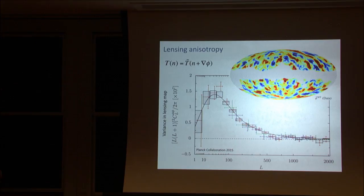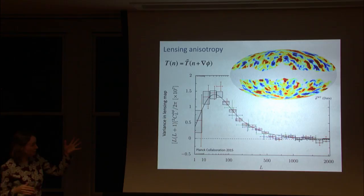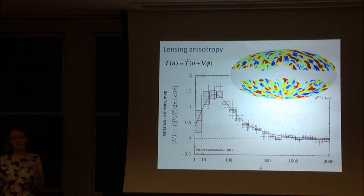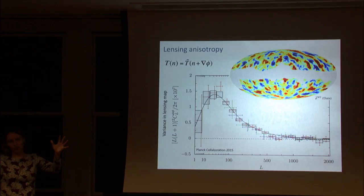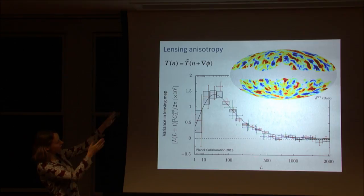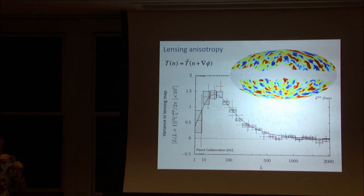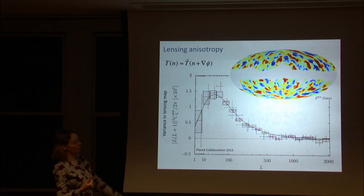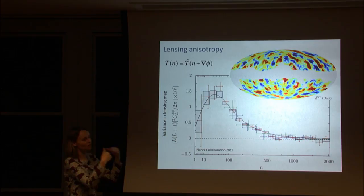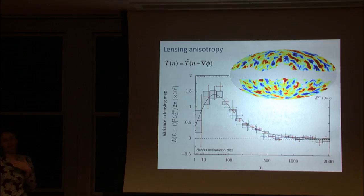One thing we'll be doing better is measuring the lensing anisotropy from the CMB. The CMB gets lensed around large-scale structure: the temperature in any given direction gets distorted by the gradient of a lensing potential. Using CMB maps, you can reconstruct what did the lensing and produce a map of the lensing potential — as done by the Planck satellite — which is basically an integral of the matter between here and last scattering.